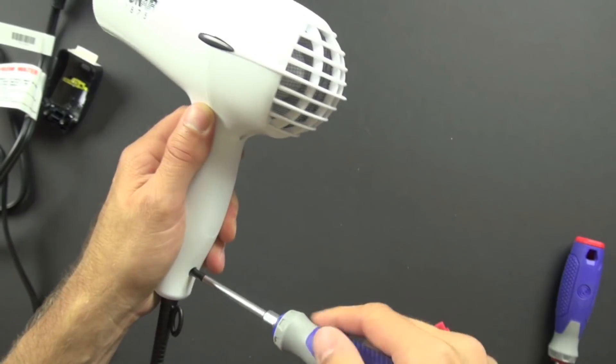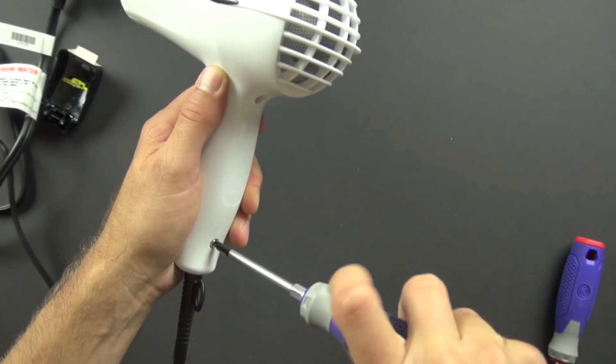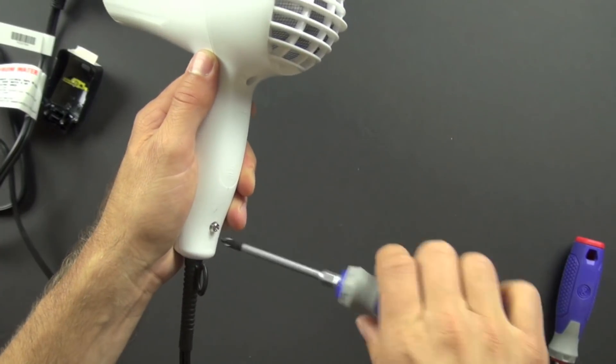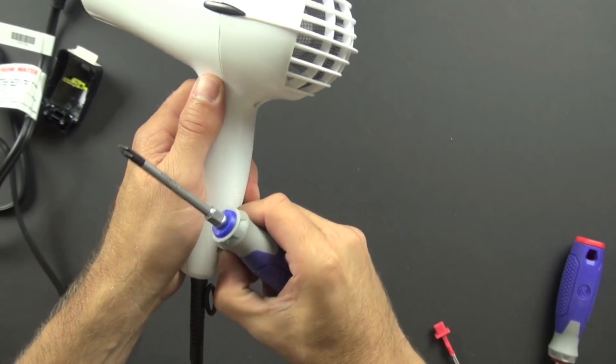I'm going to use a Phillips head screwdriver here and just remove these screws. Now these screws are plated, they're made out of steel, and I believe they look like they're chrome plated because they're super shiny.